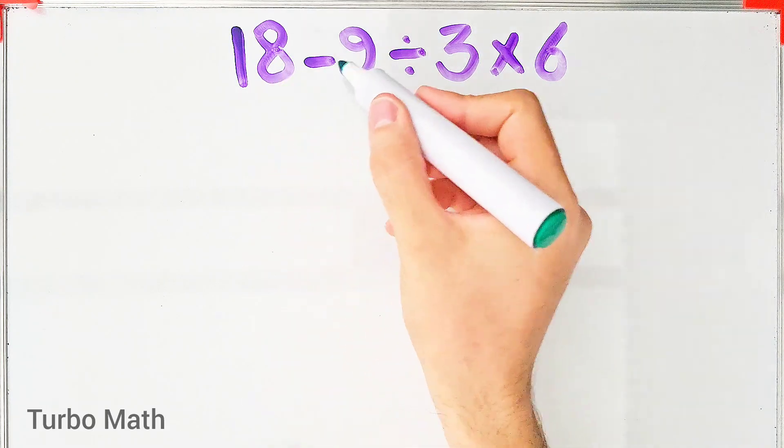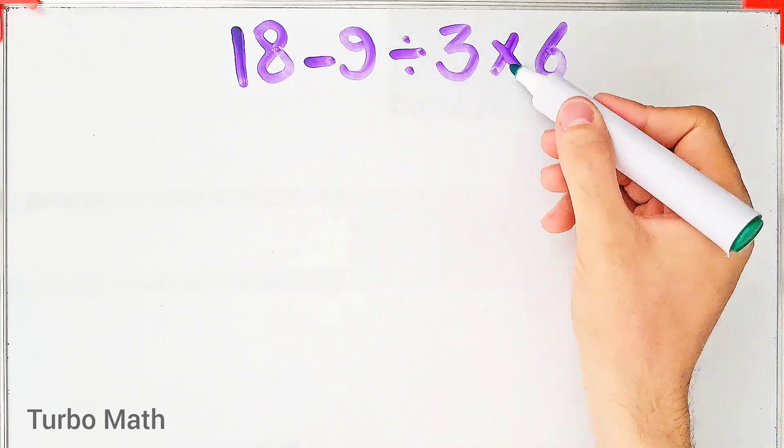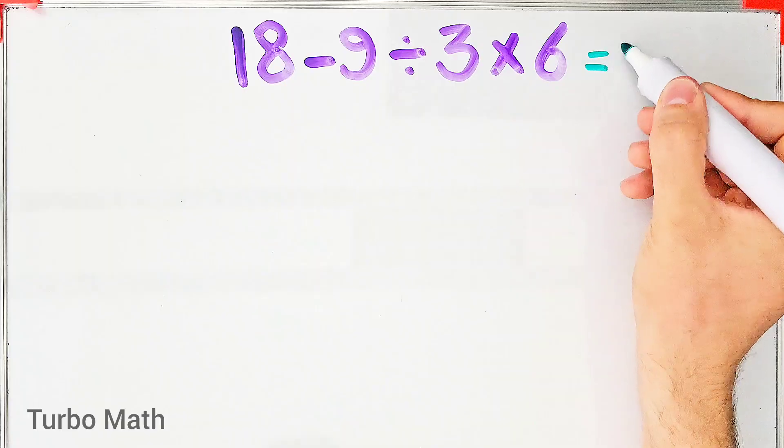18 minus 9 divided by 3 then times 6. What is the answer of this question? Can you solve it?